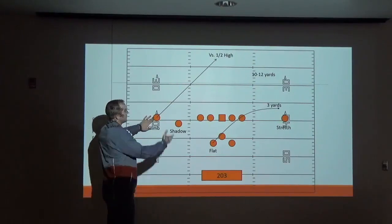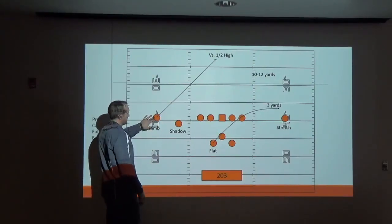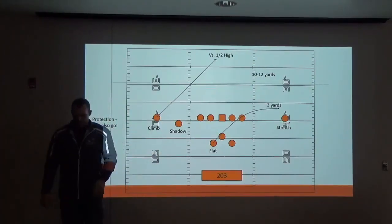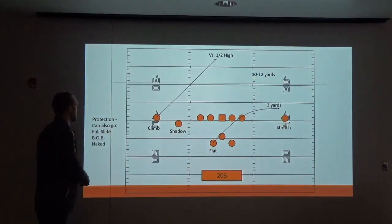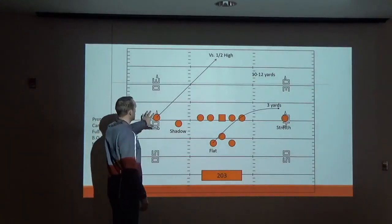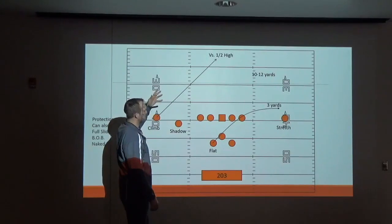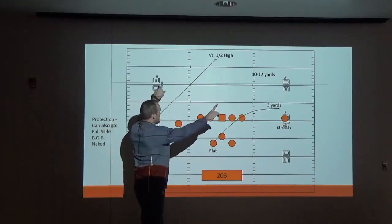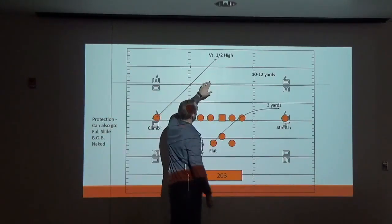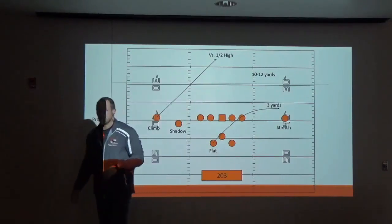Then our climb. And the route will change based on alignment. It will change based on the type of coverage that we get. It will change based on the bubble of space that we identify. But real simply, if there are two safeties up there, he's going to split the difference. If there's one, he's going to try to get right in front of that kid's face.